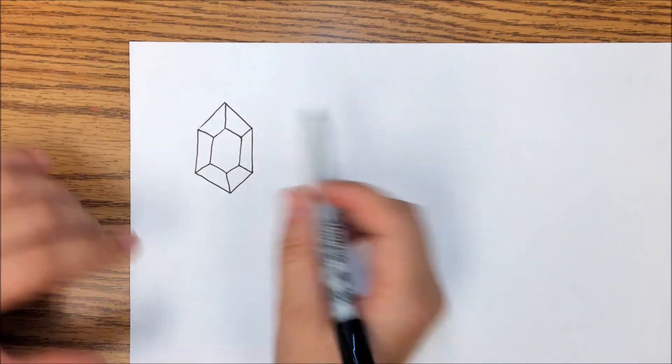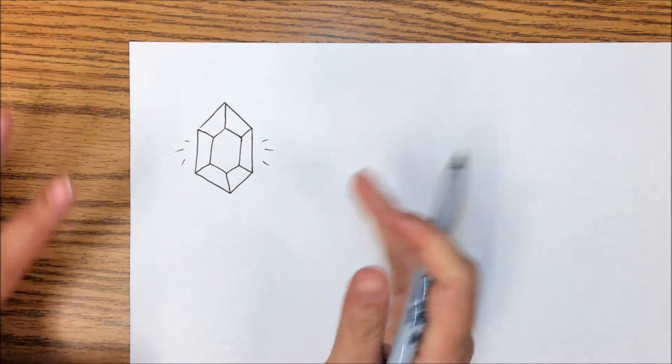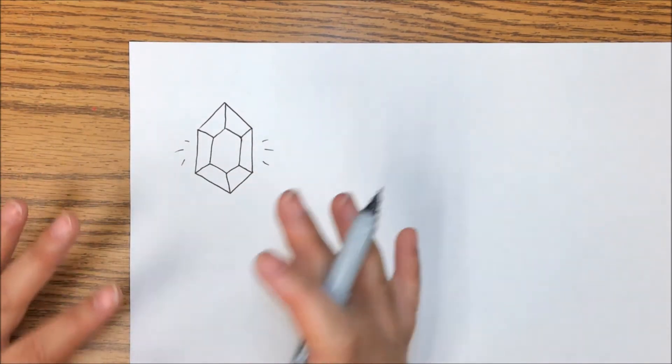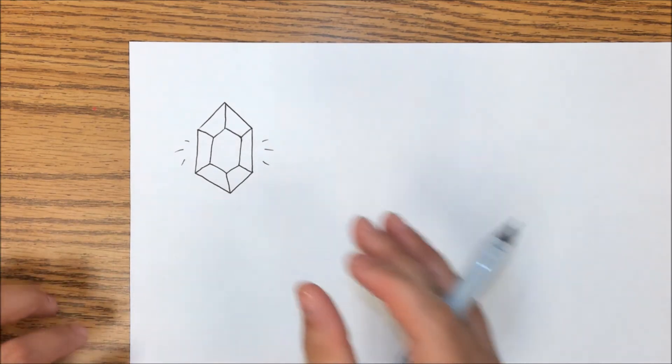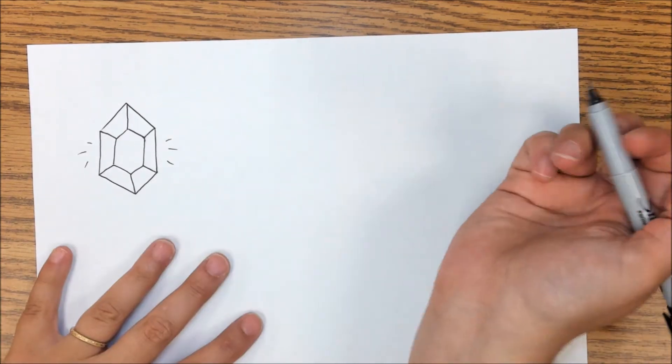So that's really my first one. I could even add some little lines to make it seem like it's shinier. Now that really three-dimensional look is going to come when we actually color these in, which is something we'll talk about next week once we have figured out the basic drawing.